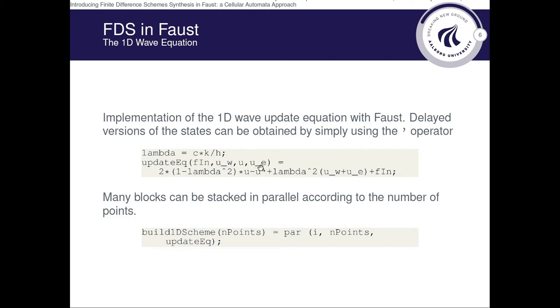the east or right neighbor state, and the current state, and this function outputs the next state for a point.